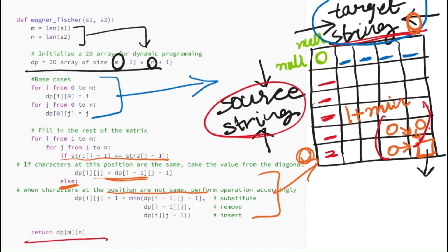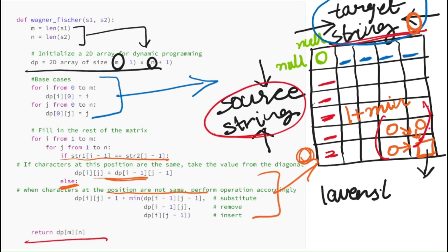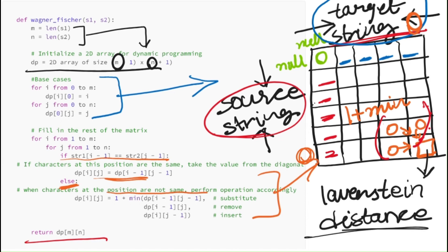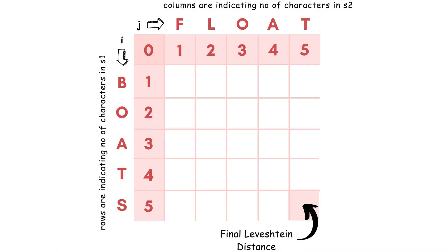Once the dp array is filled, we can backtrack from the bottom-right corner to the top-left corner to find the sequence of operations that transform one string into another.